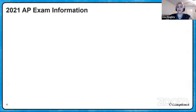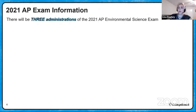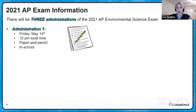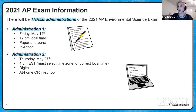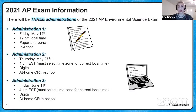There'll be three exam administrations for the 2021 AP Environmental Science exam. The first administration happens on May 14th at 12 p.m. local time; it's a paper and pencil exam taken in school. Administration 2 is Thursday, May 27th at 4 p.m. Eastern Standard Time — you must select the correct time zone for your local area. It is a digital exam that can be taken at home or in school. Administration 3 is also digital, on Friday, June 11th at 4 p.m. Eastern, also at home or in school.